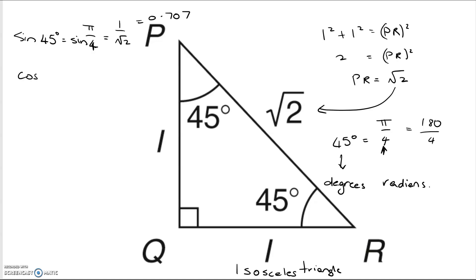And cos 45 degrees is also the same as sine pi by 4. And cos 45 degrees is the adjacent over the hypotenuse, which is, again, 1 over root 2.